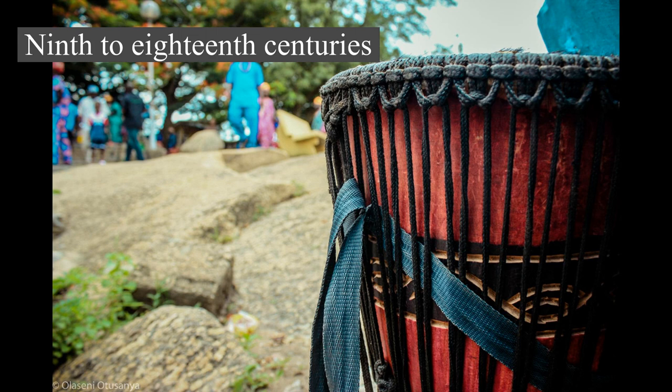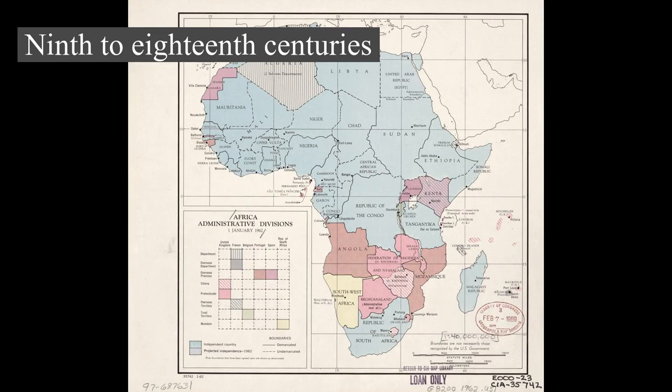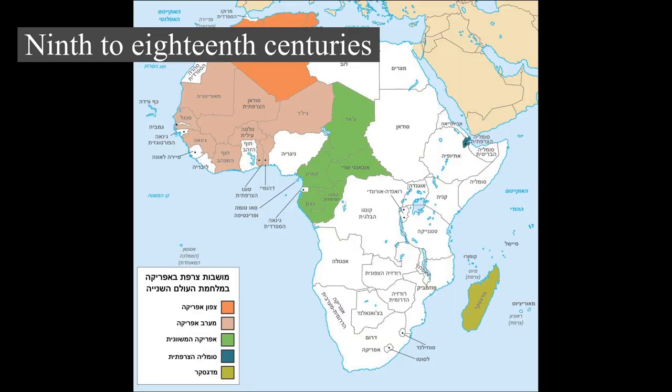By the 9th century AD, a string of dynastic states, including the earliest Hausa states, stretched across the sub-Saharan savannah from the western regions to central Sudan. The most powerful of these states were Ghana, Gao, and the Kanem-Bornu Empire. Ghana declined in the 11th century, but was succeeded by the Mali Empire, which consolidated much of western Sudan in the 13th century.